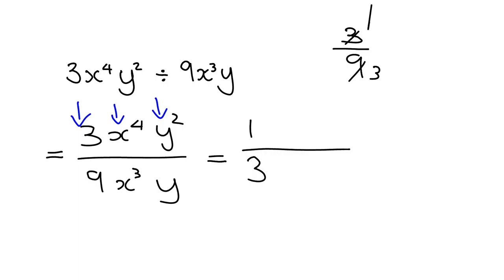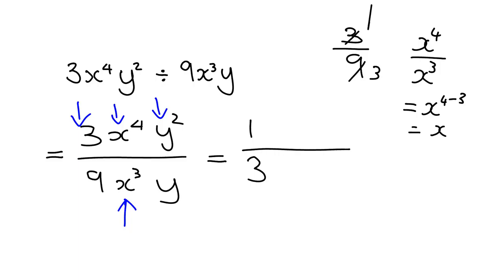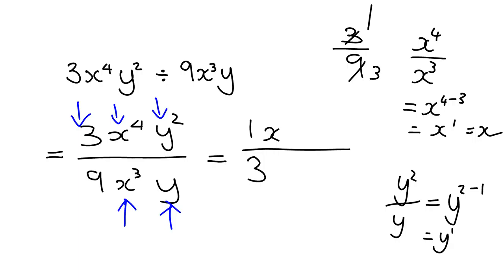Let's go on to the x's. I've got x to the 4 over x cubed. That's going to be equal to x to the 4 minus 3, which is just x to the power of 1. And we know that x to the power of 1 is just exactly the same as x. Then let's deal with the y's. We've got y squared over y, so it's y to the 2 minus 1, which is y to the 1. And we know y to the 1 is just equal to y. So we get our answer: 1xy over 3. And if we want to write that more nicely, we know that 1xy is just the same as xy over 3 — if our coefficient is 1, we often don't write it.